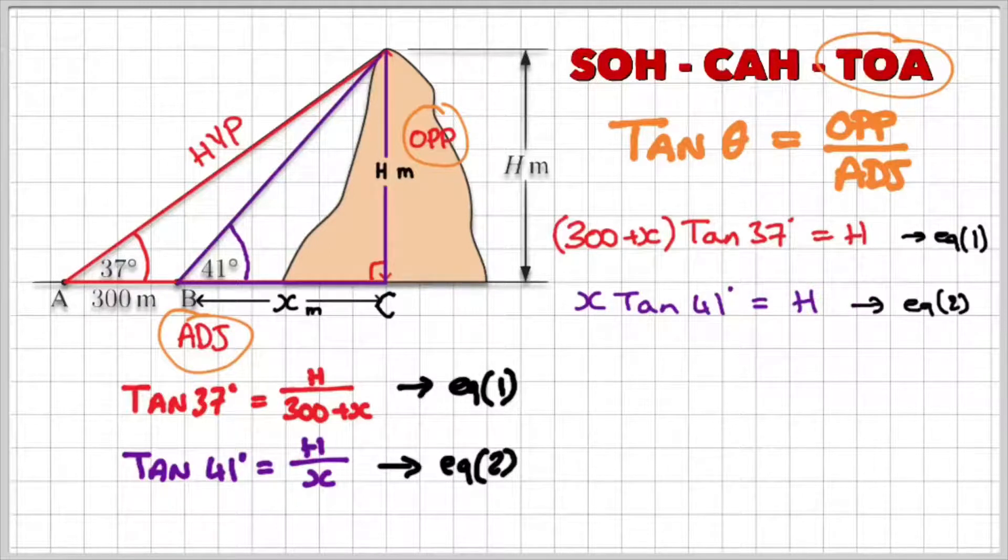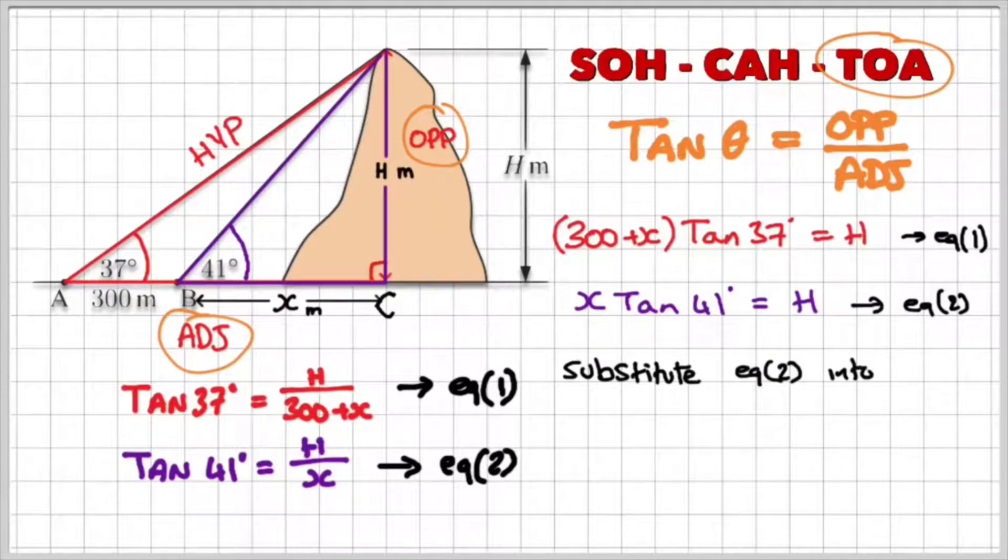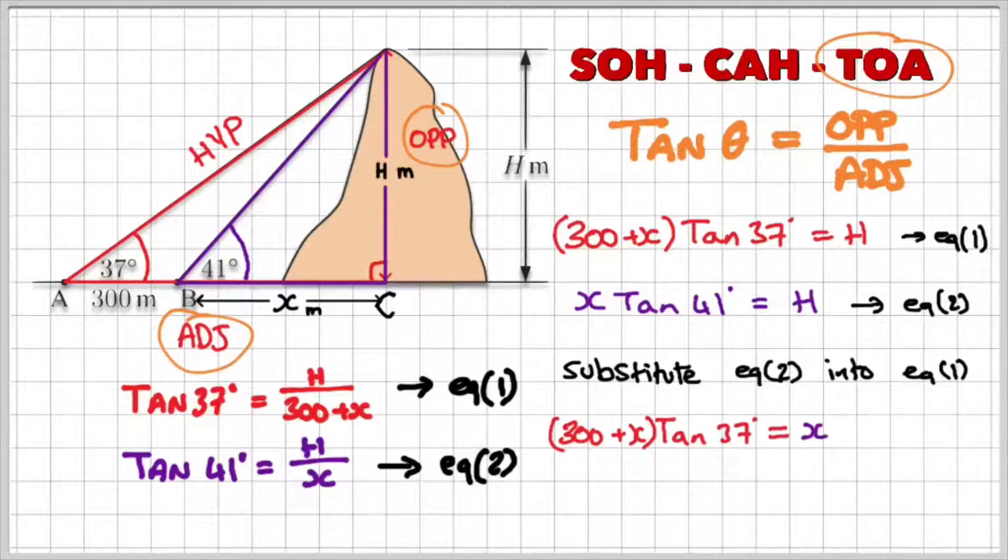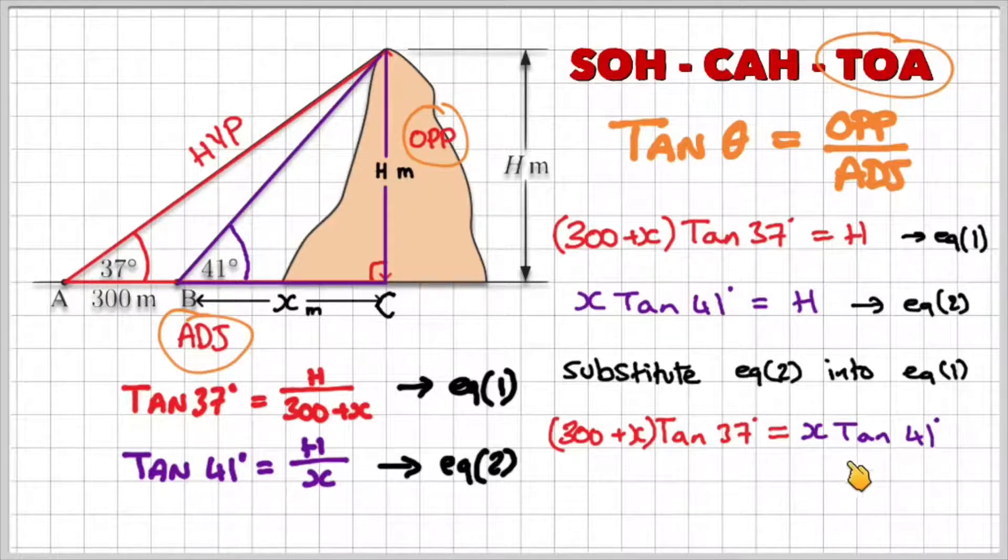Now I've still just called that equation one and equation two. And what I'm going to do is I'm going to substitute equation two into equation one. So I know that h is equal to x times tan 41. So this h here in equation one, I'm going to replace it with x tan 41. So here you can see 300 plus x multiplied by tan 37 is equal to x times tan 41.